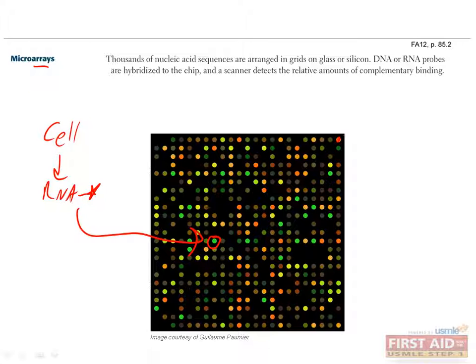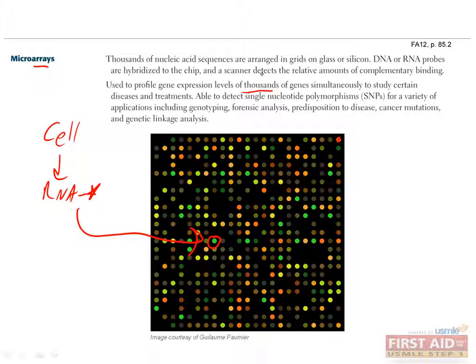Next, you let a machine read the chip by looking for those fluorescent labels, and since the probes are arranged in a specific order, the machine knows which ones correspond to which genes. Microarrays are particularly useful when you want to look at large numbers of genes, such as when looking for predisposition to disease or mutations that have given rise to a tumor. They can also be used to detect single nucleotide polymorphisms, or SNPs, which can be used for genotyping or linkage analysis.